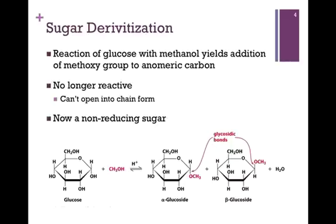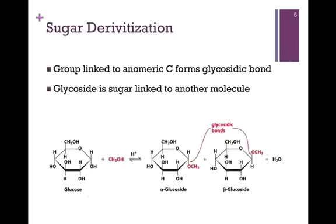In this example, illustrated at the bottom of the slide, glucose is reacted with methanol, and that yields a glucoside. That methoxy group can add at either the alpha or beta position, so we get a mixture of an alpha glucoside and a beta glucoside. You'll notice that methoxy group has been added at that number one carbon position — that's our anomeric carbon. Once we react it in this way, that ring structure can no longer open. We no longer have that reactive carbonyl group, and so now it is a non-reducing sugar. The bond connecting that methoxy group to glucose is referred to as a glycosidic bond. A glycoside is a sugar linked to any other molecule or group, and that bond is a glycosidic bond connecting a sugar to any other molecule.